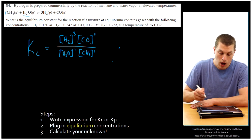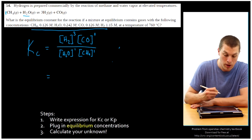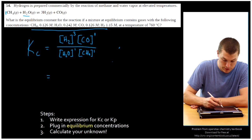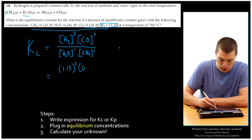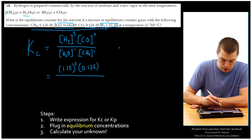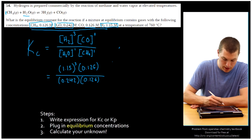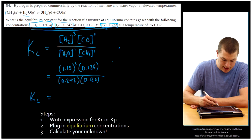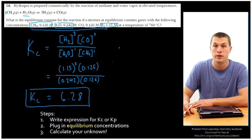Now we plug in our equilibrium concentrations to calculate Kc. Our hydrogen concentration is 1.15 molar, and we cube that. Our carbon monoxide concentration is 0.126. We divide by our water concentration of 0.242 and our methane concentration of 0.126. Plugging that all into a calculator, we get Kc = 6.28. Remember that equilibrium constants are unitless, so we just leave it as 6.28. That's calculating an equilibrium constant from equilibrium concentrations.